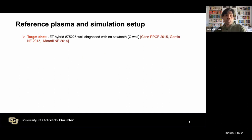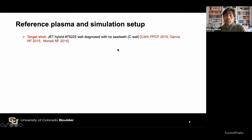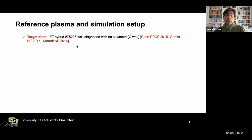We selected a specific well-diagnosed carbon-wall JET tokamak hybrid discharge 75225. We selected this discharge because it has better diagnostic measurements and is well documented in the literature for rho > 0.3. Since this is very new work, it is important to understand the physical mechanism first, and that is why we are using this carbon-wall era discharge and not tungsten.